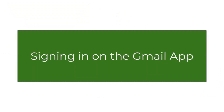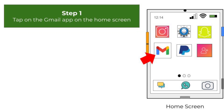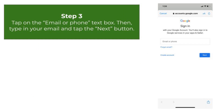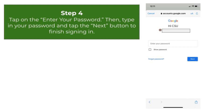Next, we will discuss how to sign in on the Gmail app if you already have an account. First, tap on the Gmail app on the home screen. Next, tap on the blue Sign In button at the very top of the screen. Then tap Google. Then tap on the text box that says Email or Phone to display the keyboard. Type in your email and tap the blue Next button. Next, tap on Enter Your Password to display the keyboard. Once you have typed in your password, tap on the blue Next button to finish signing in.